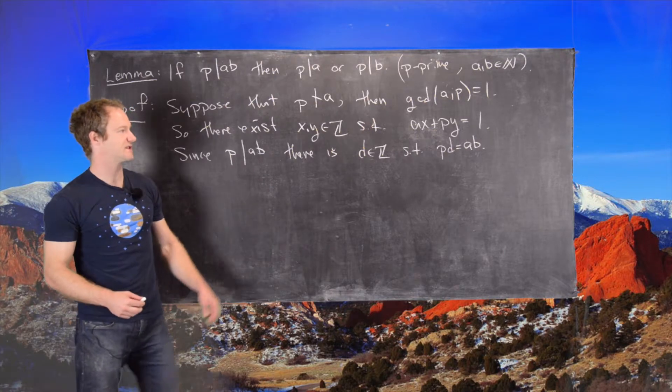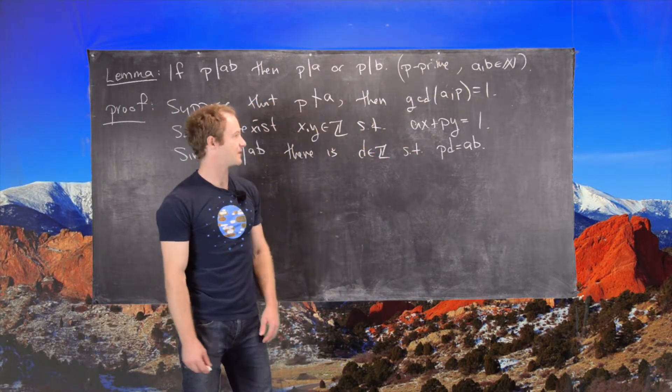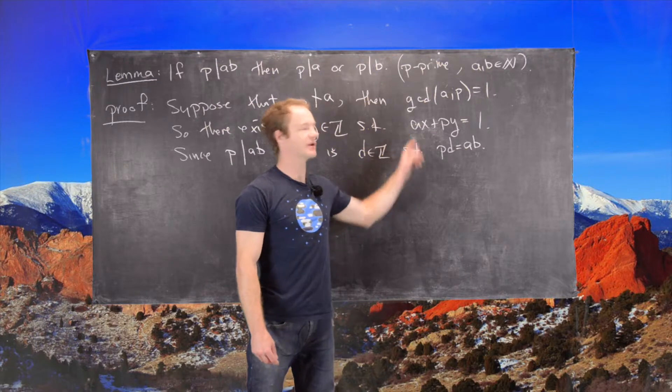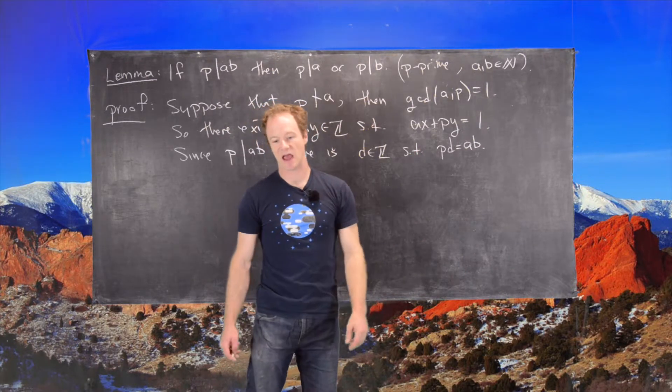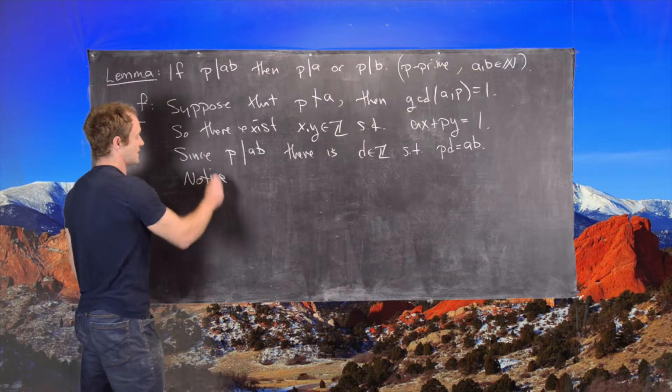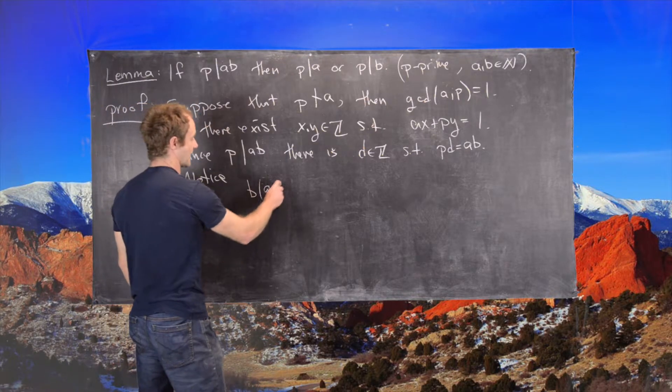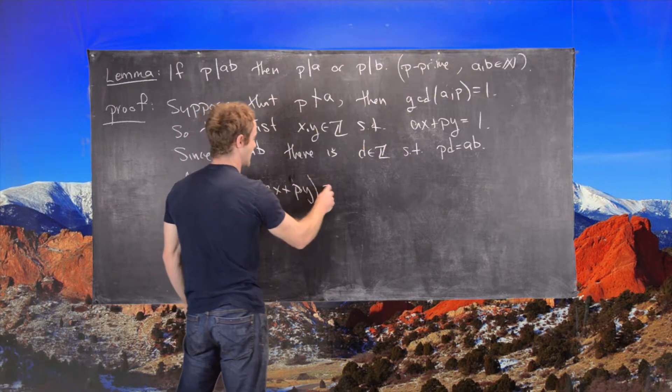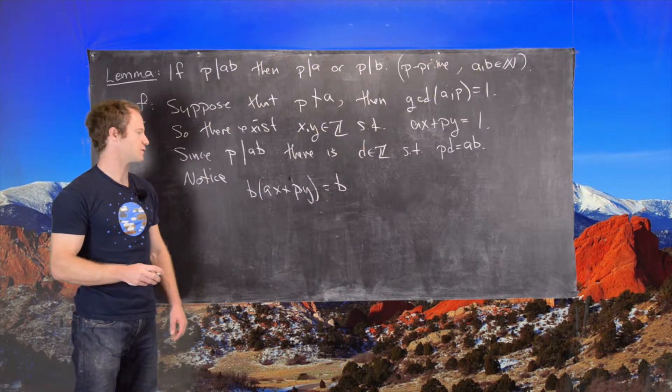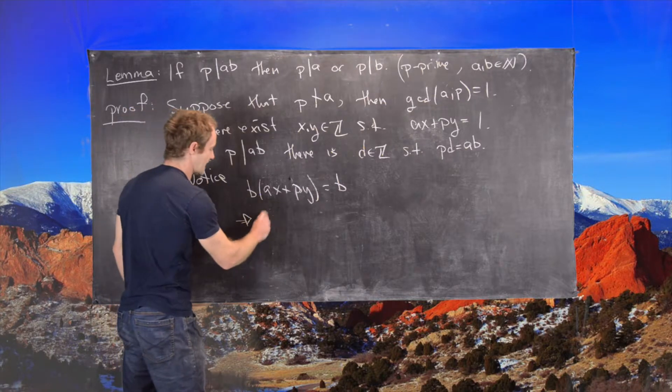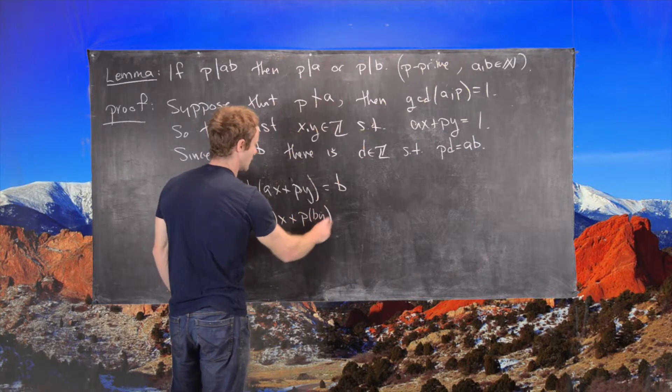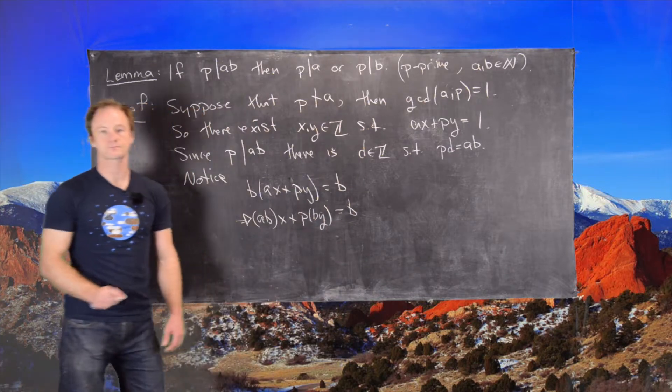Now we want to put these two equations together. We'll take this entire equation and multiply it by B to give us an AB term. Notice that B times AX plus PY equals B, which gives us A times BX plus P times BY equals B.